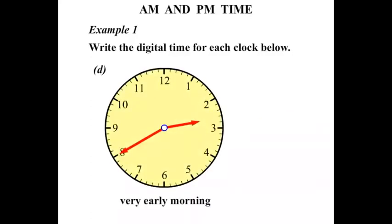This one here, it's twenty to three in analog time. So we write that in digital as 2:40. Now it's very early morning so it is AM. 2:40 AM, you'd certainly be still asleep then.